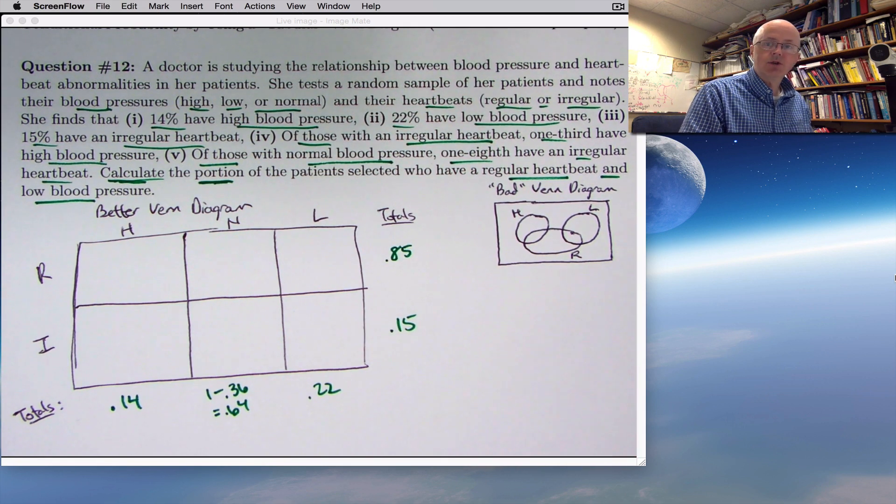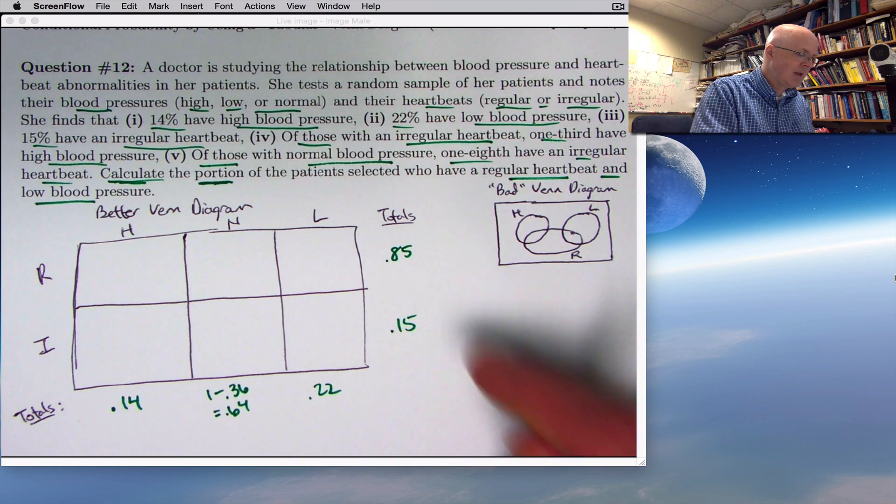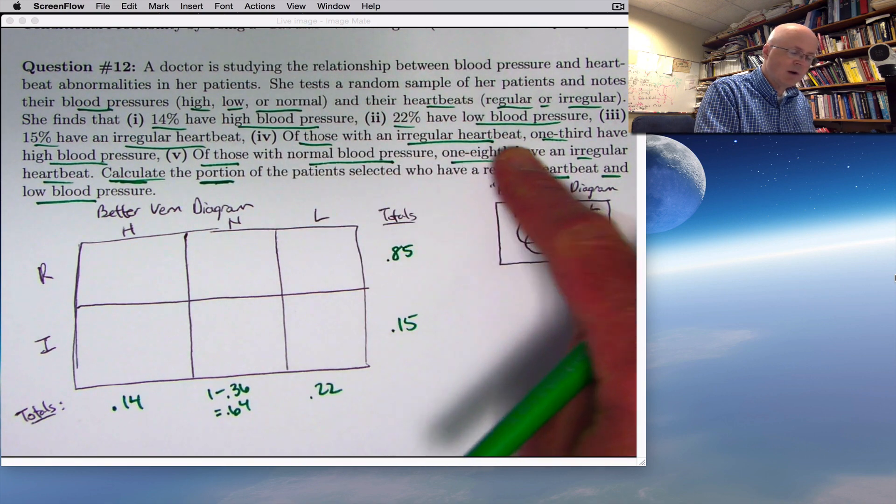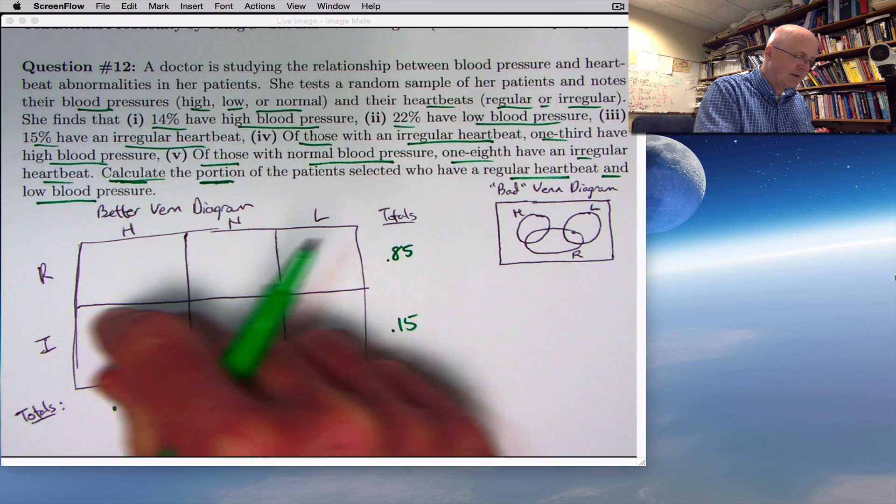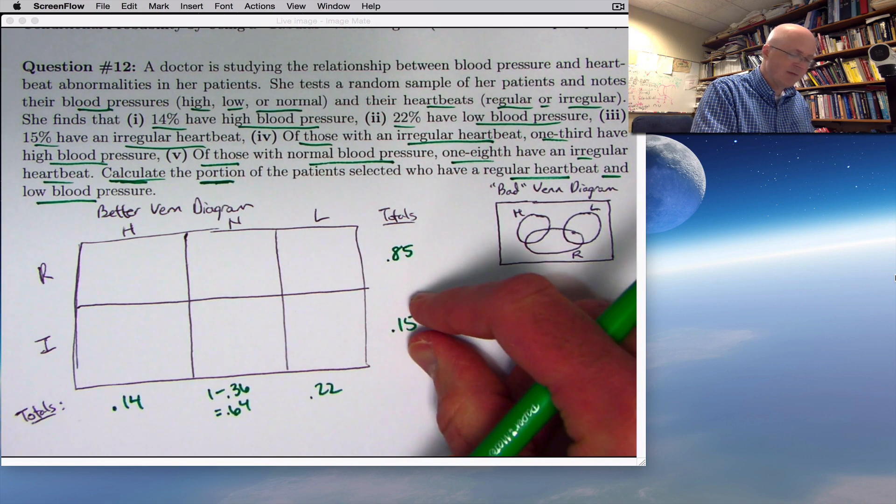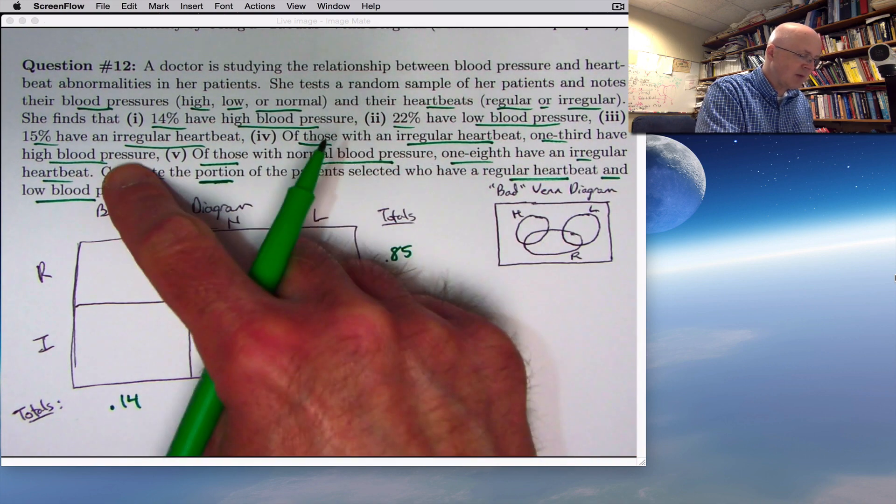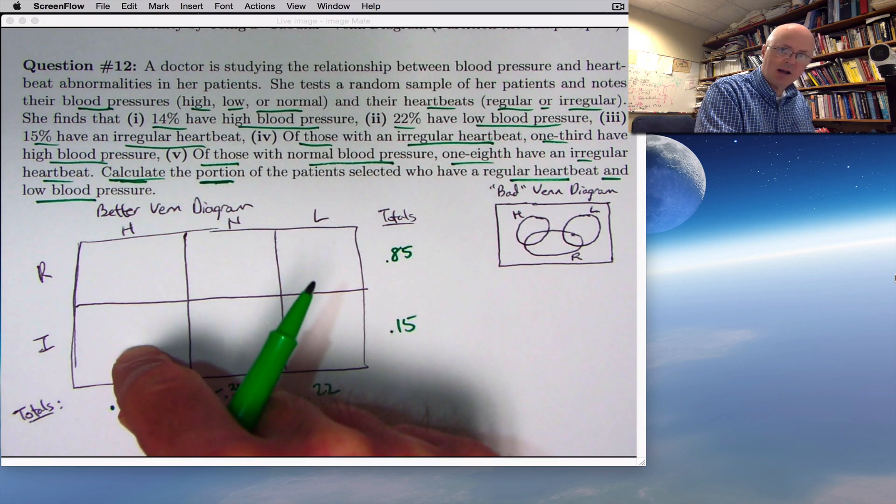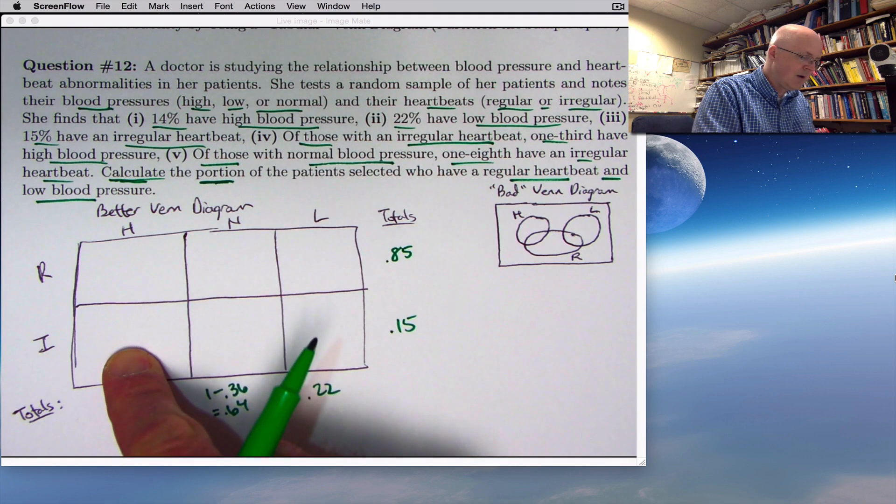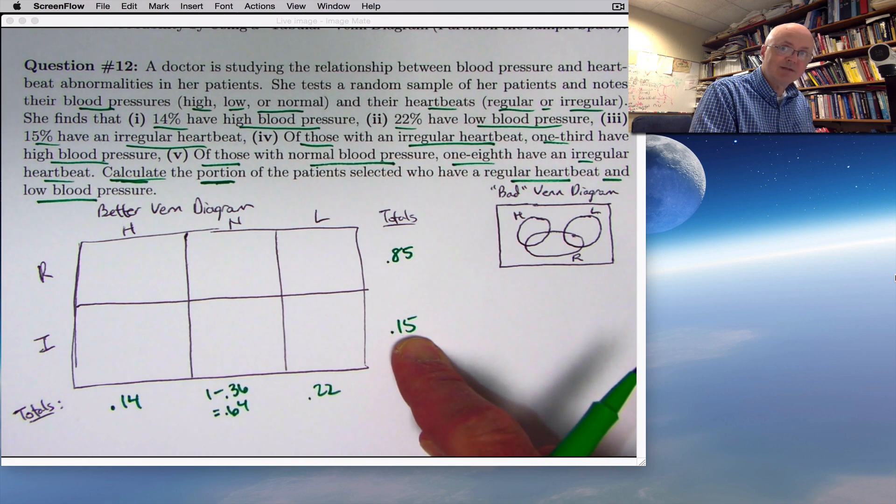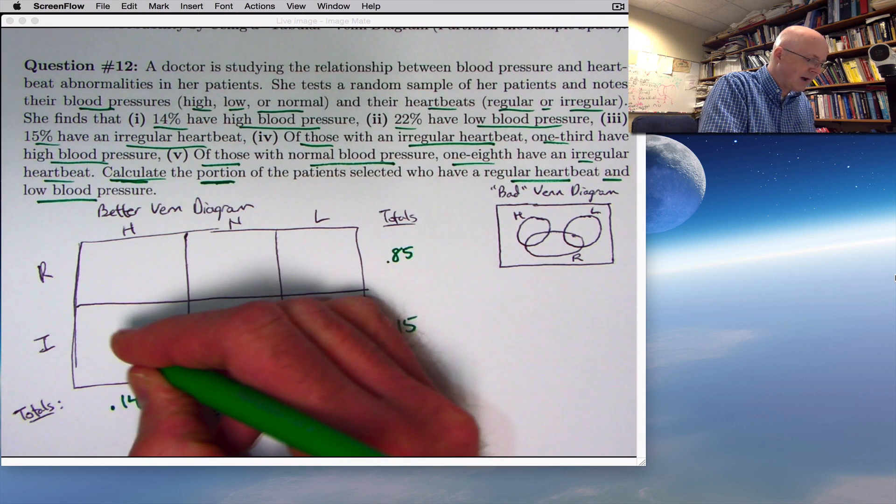I haven't used the conditional probability information yet. Let's use that next. Of those with an irregular heartbeat, focused on the people that are down here, that represent 15% of everybody overall, 1 third have high blood pressure. They're also in this column here under the H. 1 third of that 15% is 5% of the overall total. Put a 0.05 here.